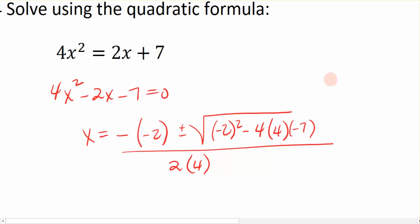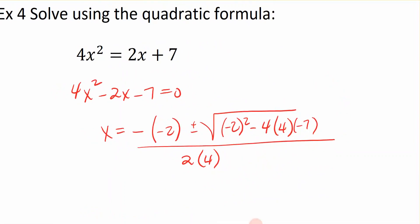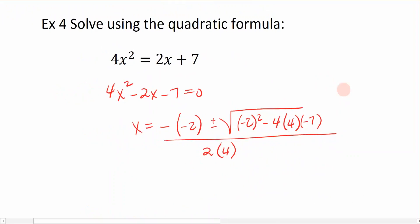Now let's go ahead and simplify what's underneath. So I have x is equal to negative times a negative 2 is a positive 2, plus or minus the square root of negative 2 squared is 4, minus 4 times 4 times a negative 7, and that gives me 116. All of that's divided by 8, which is in the denominator.